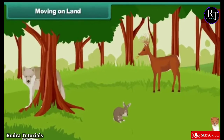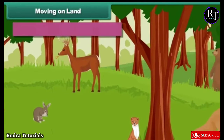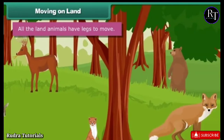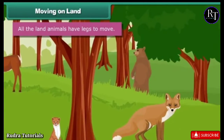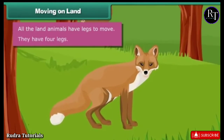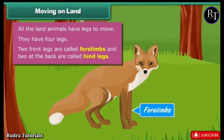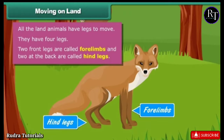All land animals have legs to move. They have four legs — the two front legs are called forelimbs and the two at the back are called hind legs.